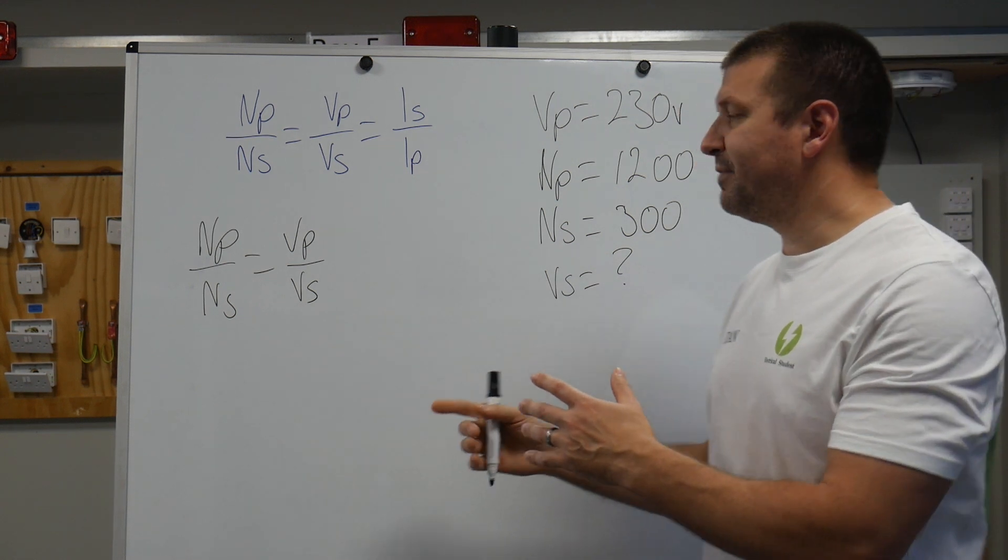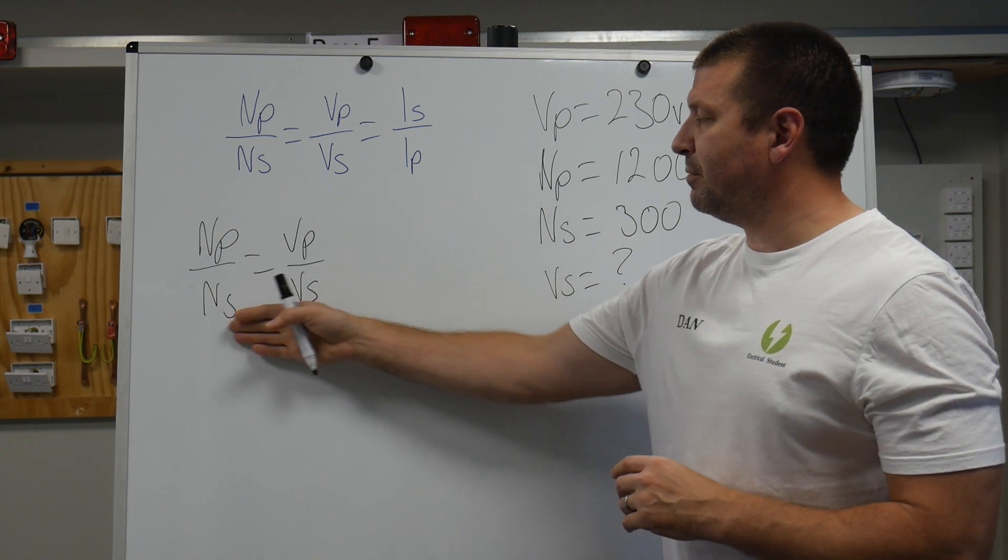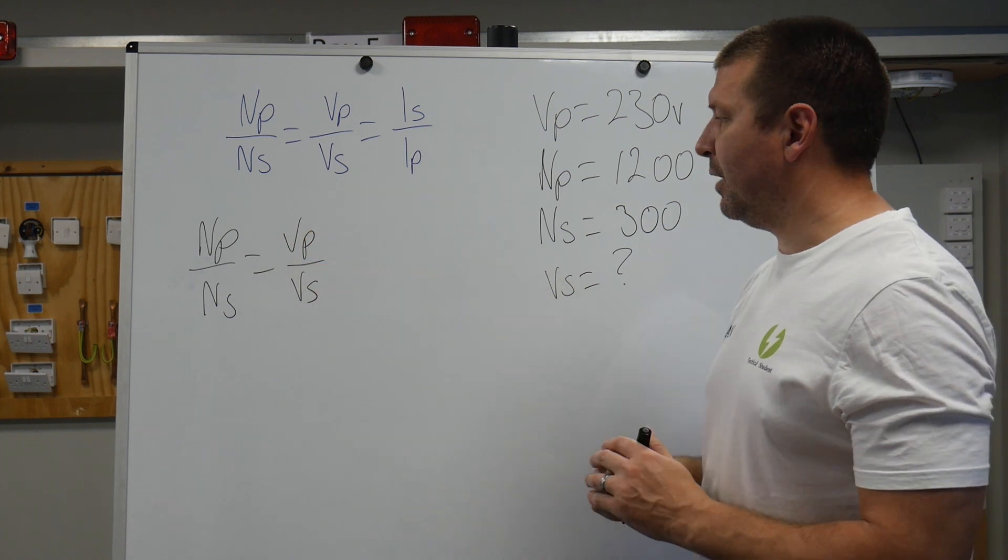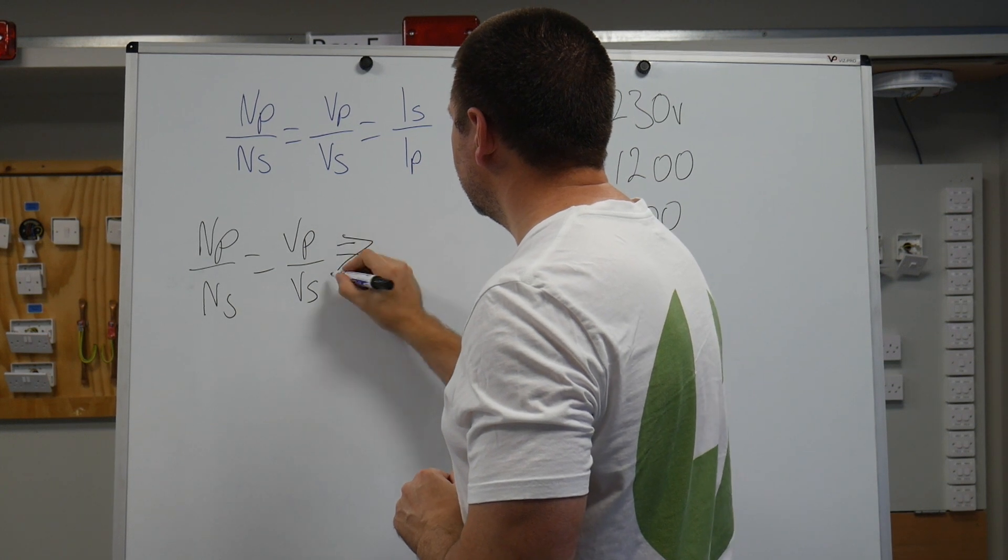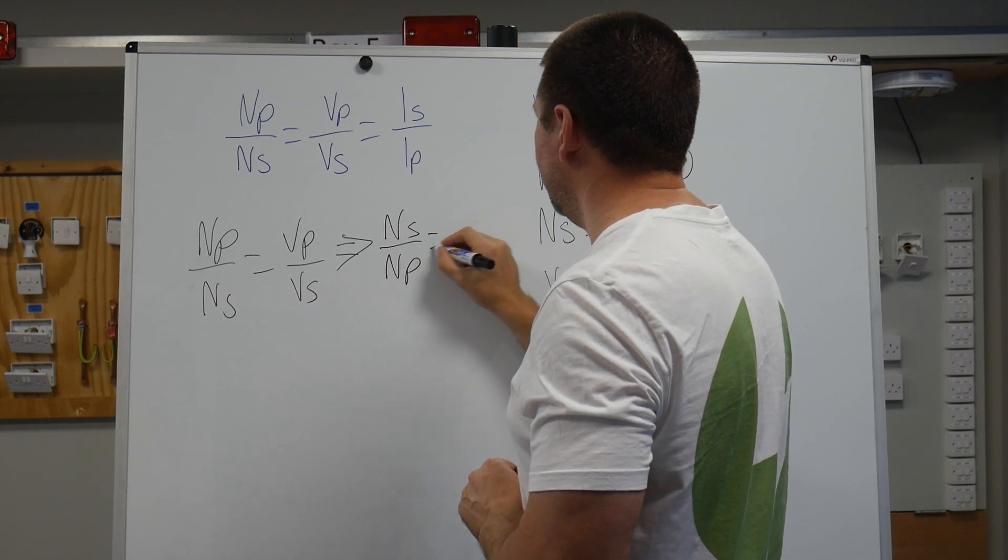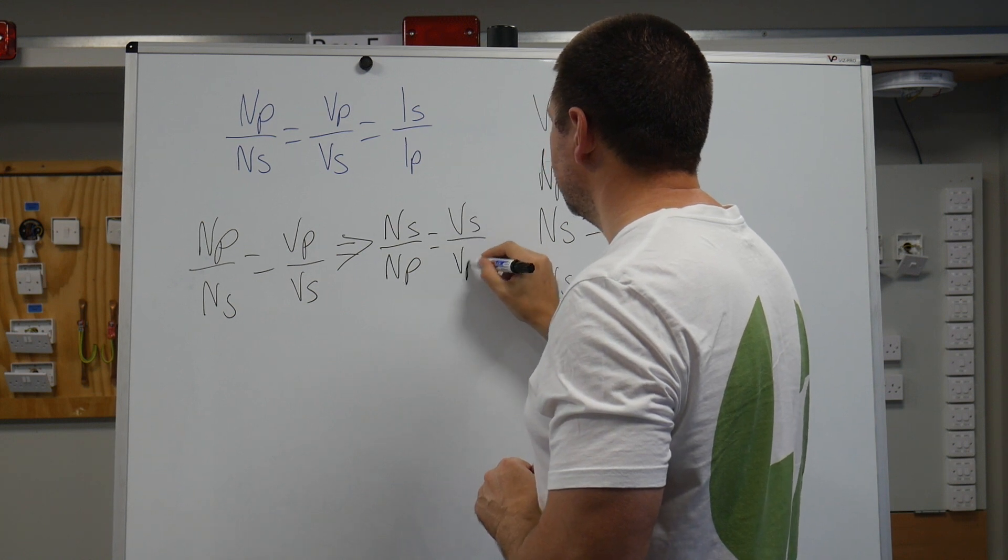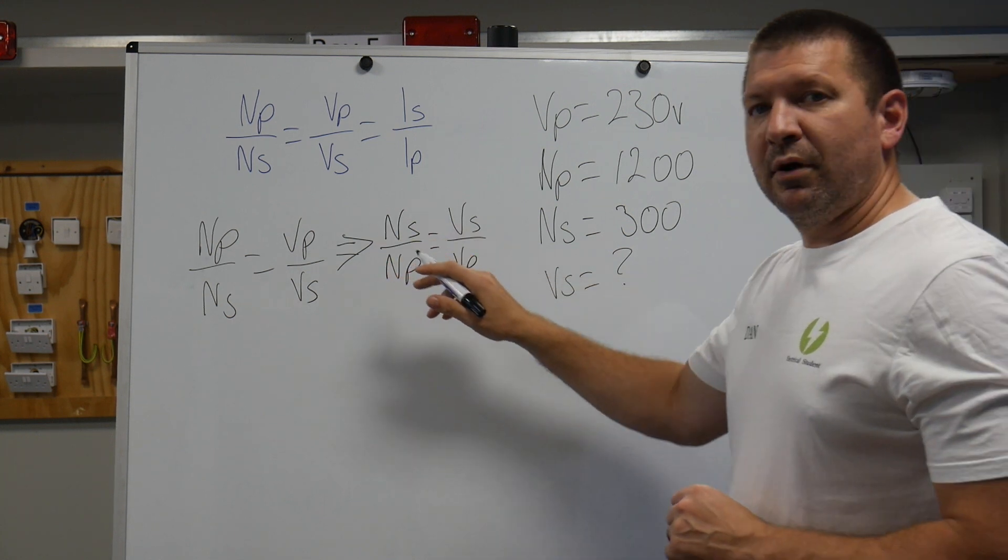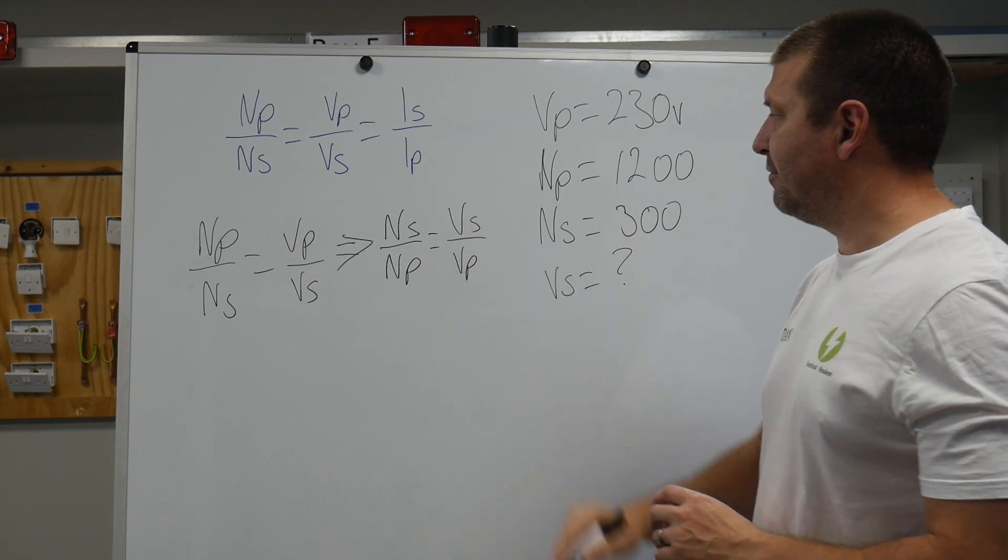Now remember, hopefully you've watched a previous video about how we transpose and manipulate this formula. If I'm looking for a value that's on the bottom of the fraction, I need to flip the fraction and then multiply out. So this becomes Ns over Np equals Vs over Vp. I've just moved this Vp, leaving Vs on its own.